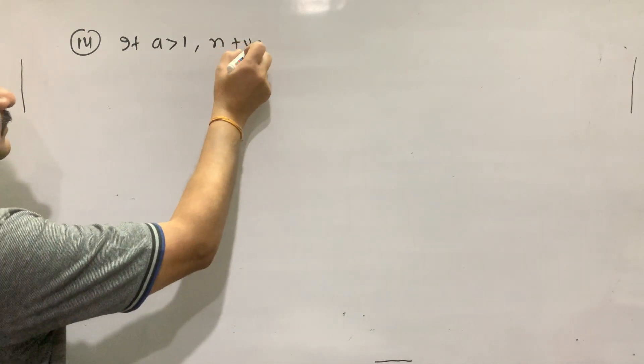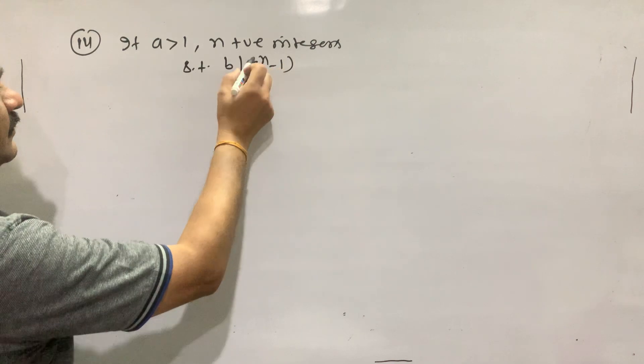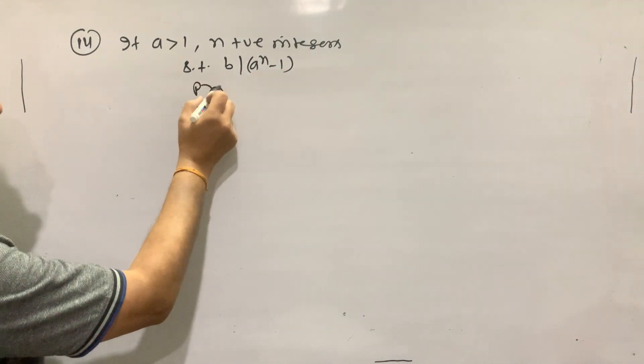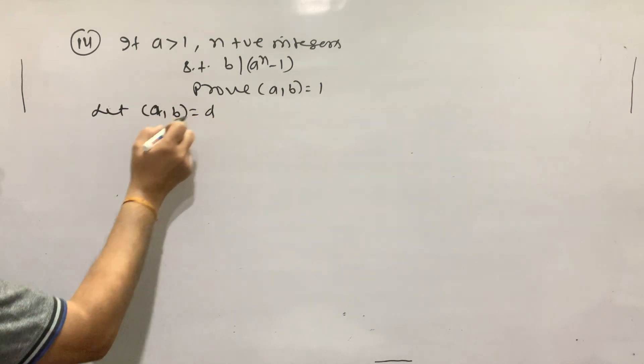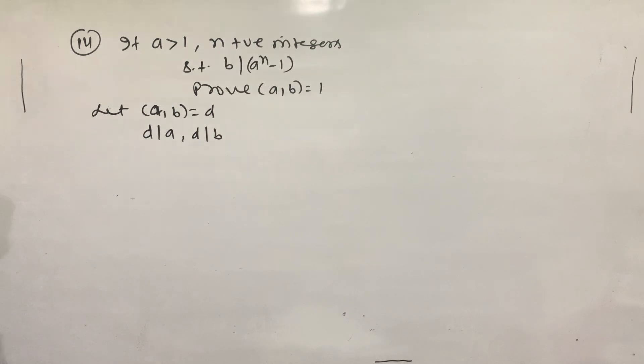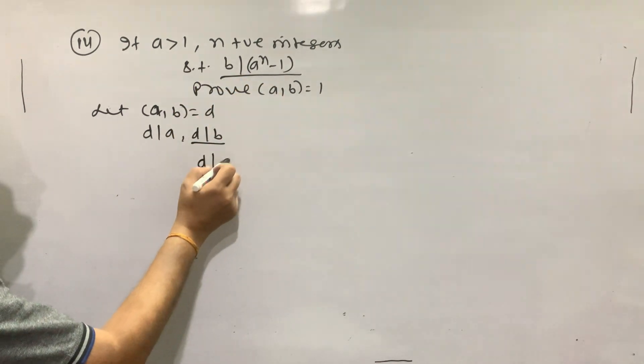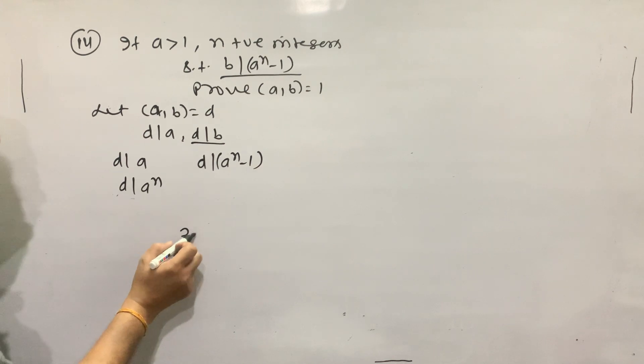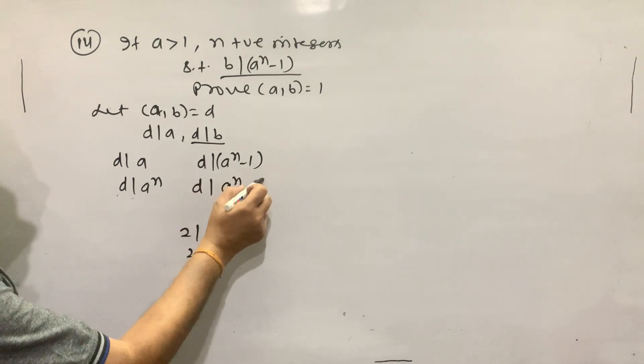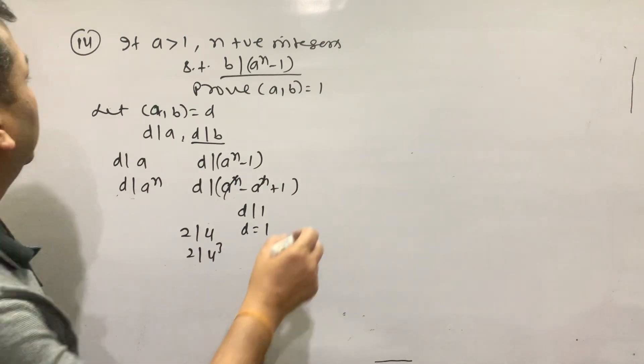Example number 14: n is positive integer such that b divided a to the n minus 1. Let me prove that GCD(a,b)=1. Okay, b divides, d divides a, d divides b. By transitive property, d divided a to the power n minus 1. d divides 1, so d equals 1 because d is positive.